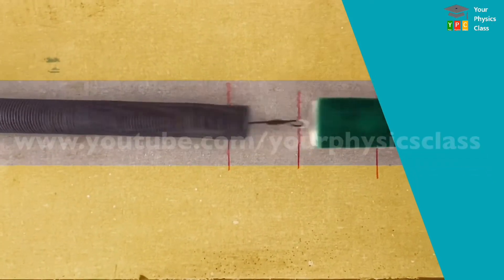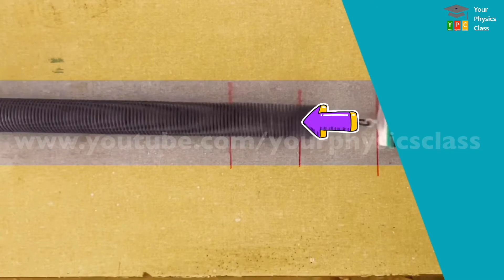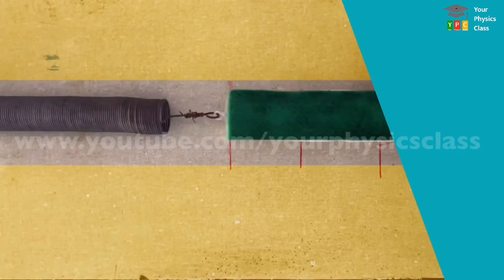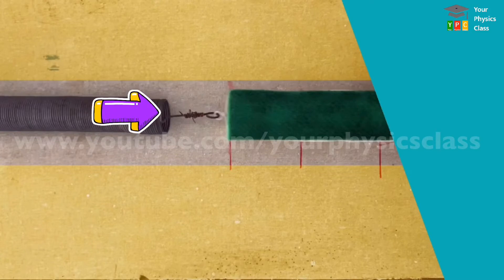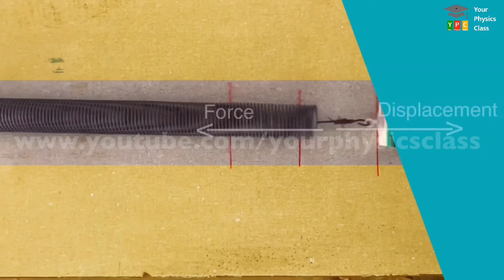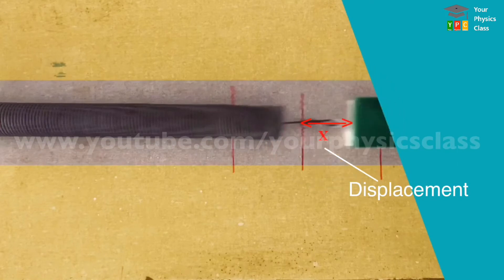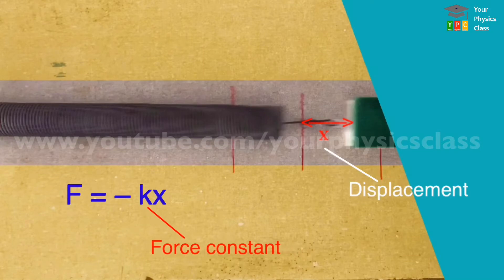As the block moves to right, spring stretches and exerts force on the block towards left. And when block moves to left, spring compresses to exert force on the block to the right. It is observed that force acting on the block and its displacement are oppositely directed. For displacement x, force exerted by the spring on the block is given by F equals minus k times x, where k is force constant.